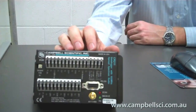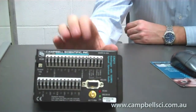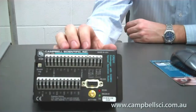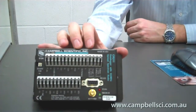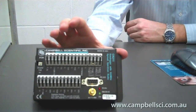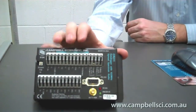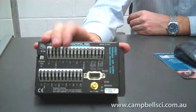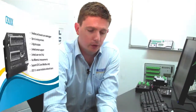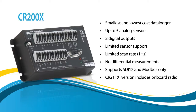The CR-200 doesn't support DNP3, but it will support Modbus. In terms of measurement channels, it has five analog measurement channels — 0 to 2.5 volts this time — and it doesn't quite have the same accuracy as the CR-800 or CR-1000; it's a less accurate logger. But it's a lot cheaper than the CR-800, so in the right circumstance it can be very valuable.